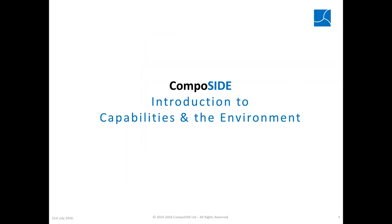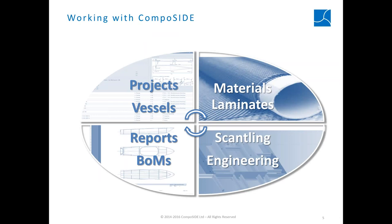Composite is an integrated platform which allows you to define projects and vessels, search and select materials, build and analyze laminates, and perform 2D/3D engineering and scantling activities. The platform also allows you to create a number of automated reports — laminate tables, laminate sections, and a summary or detailed bill of materials for all the components you model, including external elements.